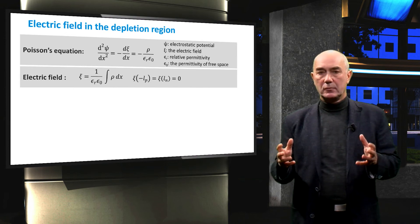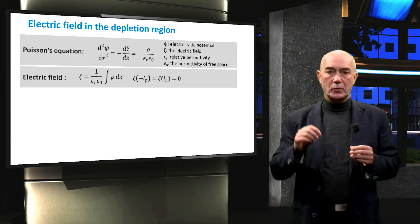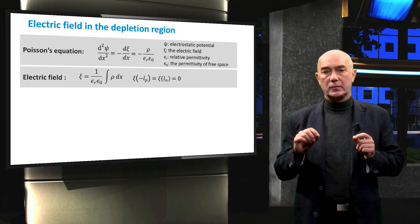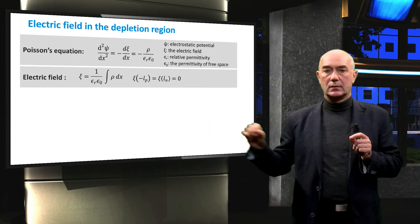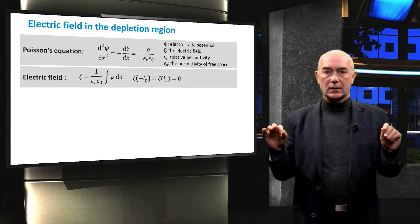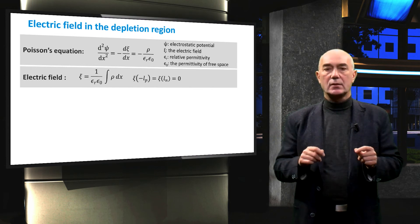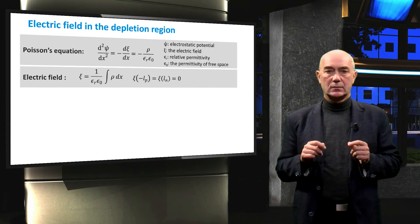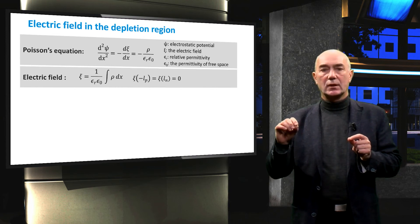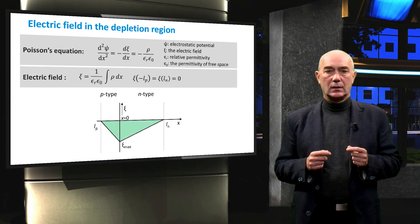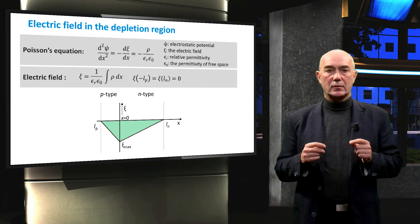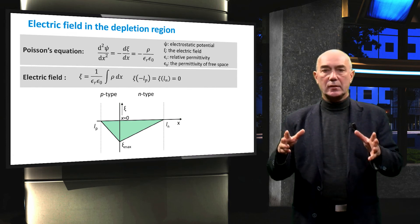To do this integration, we need two boundary conditions: one for the edge of the depletion region in the N-type material and the other for the edge of the depletion region in the P-type material. We know that outside the depletion region there is no electric field, hence the electric field at the edges of the depletion region is zero. If we execute this calculation, we obtain a profile of the internal electric field. The electric field is indeed zero at the edges of the depletion region, where the quasi-neutral regions start.